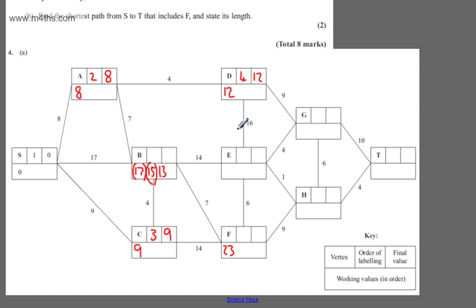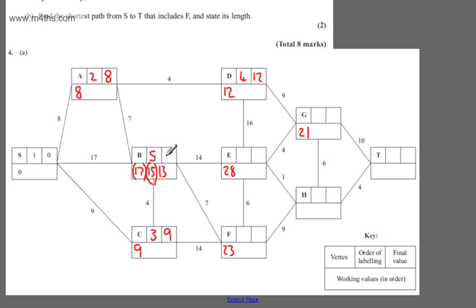I now consider all of the unconnected vertices I can reach directly from D. The answer is E: 12 plus 16 gives me a working value of 28. We've also got 12 plus 9 equals 21. Those are all the unconnected vertices reachable directly from D. We now consider the one of lowest weight: 28, 23, 21, and 13 — don't forget B. 13 is of lowest weight. This becomes order 5 with a final value of 13.